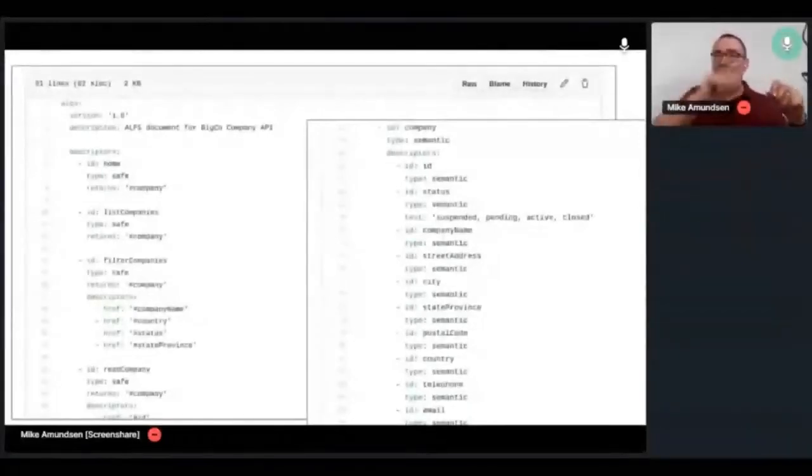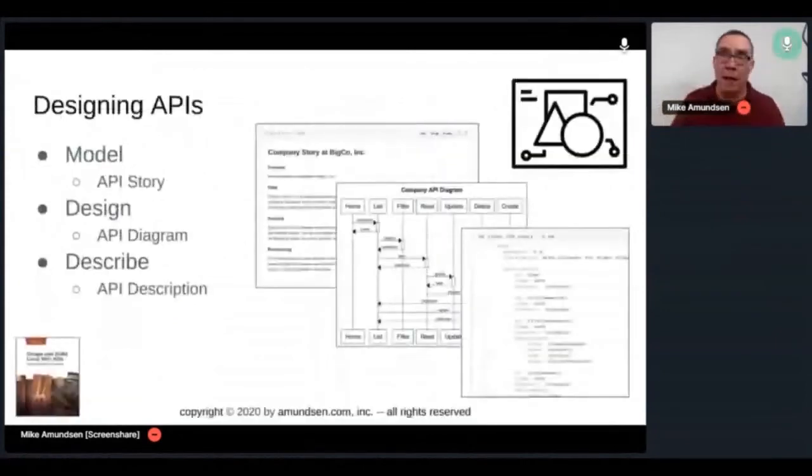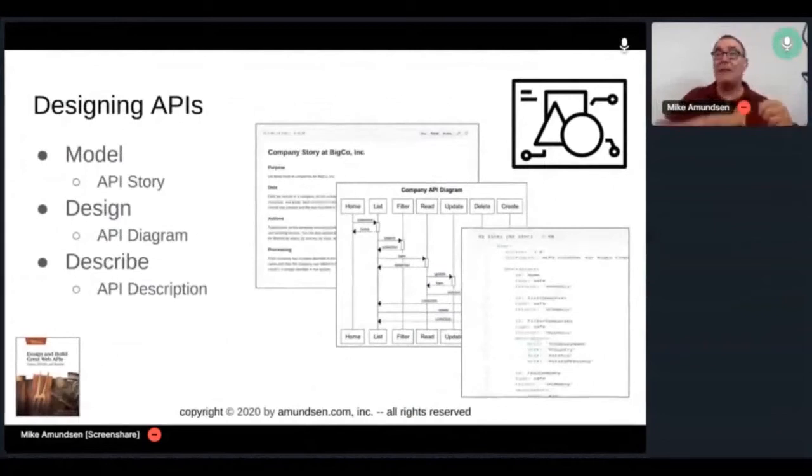The ALPS is really the robot or the machine version of the story. So I wrote down the story, the data, the actions, and all of that stuff. Now I convert it into something a machine reads. That's what this is. So model using your story, design using a diagram, describe using something like ALPS or some other description. Some people skip ALPS and go right to the type. Like they'll go to RAML or open API. It's fine if you want to do that. But I encourage you to come up with a technology agnostic version that lets you actually launch several different types of designs.